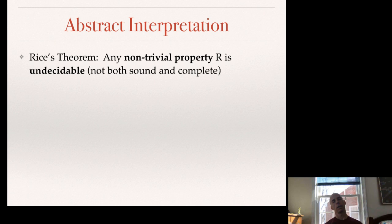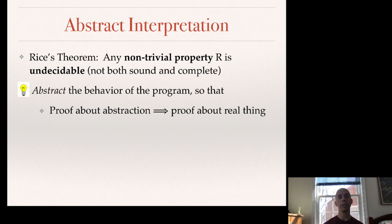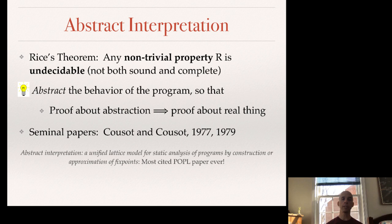Unfortunately, no static analysis for any interesting property can be both sound and complete — this is a consequence of Rice's theorem. So we're going to have to make approximations, being either sound but not complete, complete but not sound, or some combination. One technique for making always-sound analyses is abstract interpretation, which abstracts the behavior of the program in such a way that a proof about the abstraction implies a proof about the real thing. This idea was proposed by Patrick and Radhia Cousot in their seminal 1977 paper — the most cited POPL paper ever.